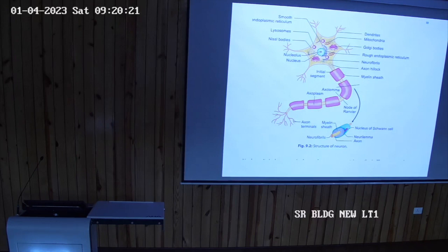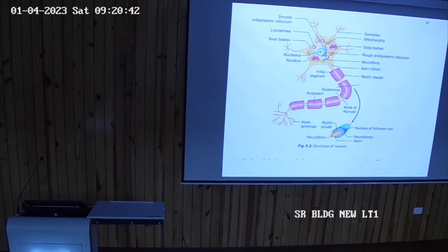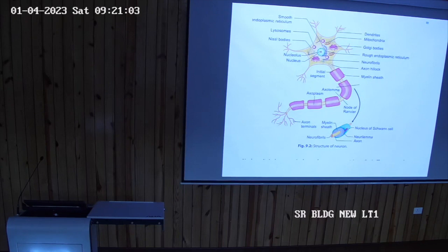As I told you, the neuron consists of a cell body and processes. The cell body of the neuron has a nucleus and other components like lysosomes, Nissl bodies, Golgi bodies, and mitochondria — all part of the cytoplasm. There are two types of processes: one is the long process, which is always one in number, called the axon. The bundle of axons forms the nerve fibers.